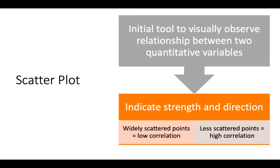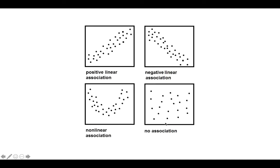We need to conduct a scatter plot. A scatter plot is an initial tool to visually observe the relationship between two quantitative variables — it indicates strength and direction. Widely scattered points indicate low correlation, while points close to one another indicate very high correlation. A positive linear correlation goes upwards; if it goes downward, it indicates a negative linear association. A U-shape indicates a non-linear association, and a random spread with no pattern indicates no association.